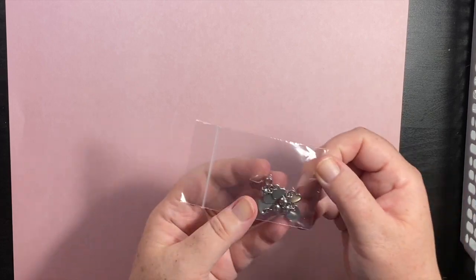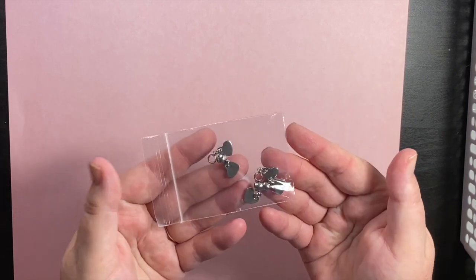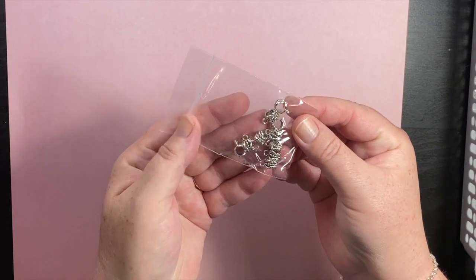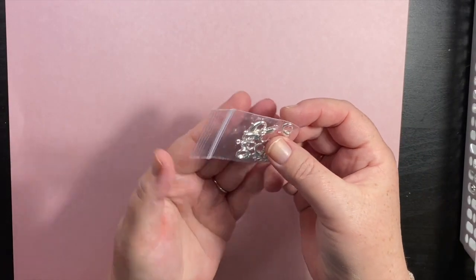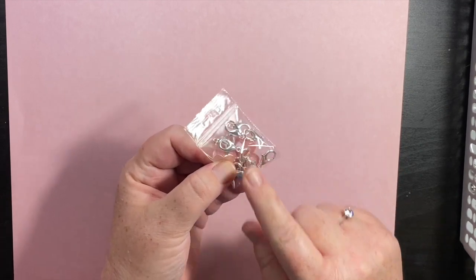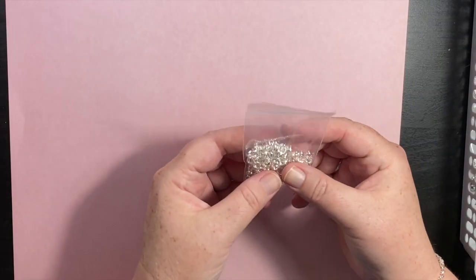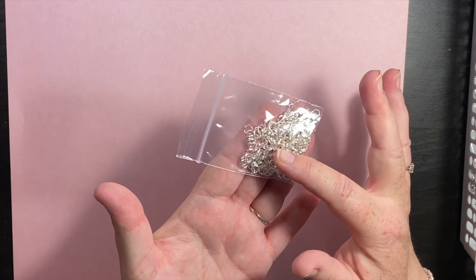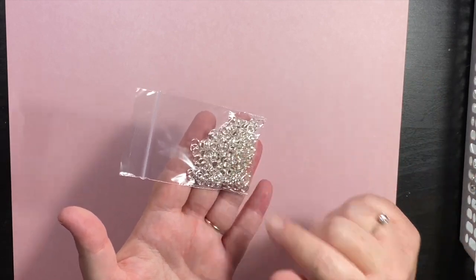These are stainless steel and you can engrave these. European bells, large lobster clasps, these are 16 millimeters. Six millimeter split rings which are like a double jump ring, extra secure.